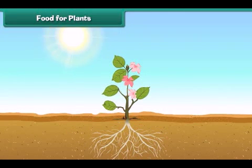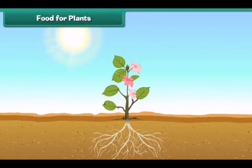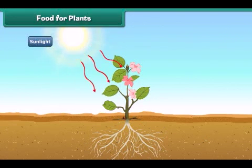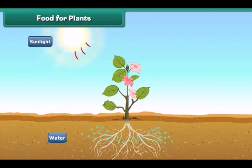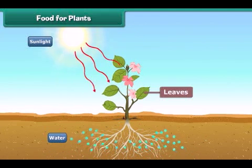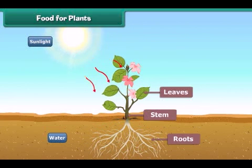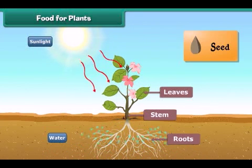Let us now understand where plants get their food. Plants make their own food with the help of sunlight. Plants take water from the soil and prepare food in their leaves. The plant takes up some part of the food and the rest is stored in its roots, stem, leaves and seeds.